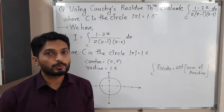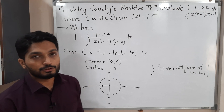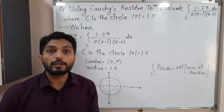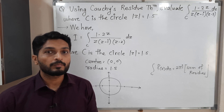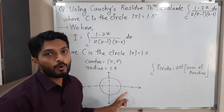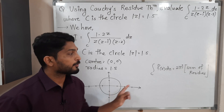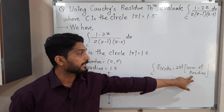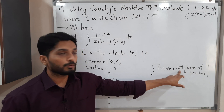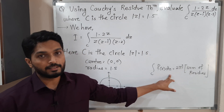Here also we do the same. We write the given function, find its singular points — the points where the function is not analytic — check whether those points lie inside or outside. If they lie inside, we find their residues, take the sum, multiply by 2πi, and that is the answer of the integral.